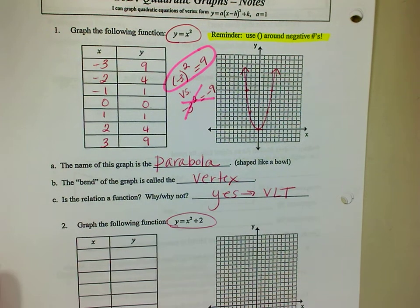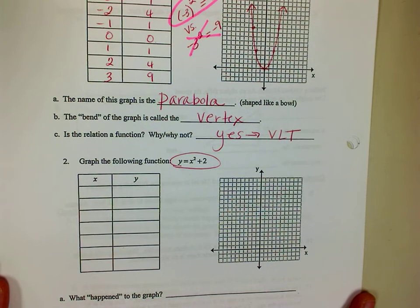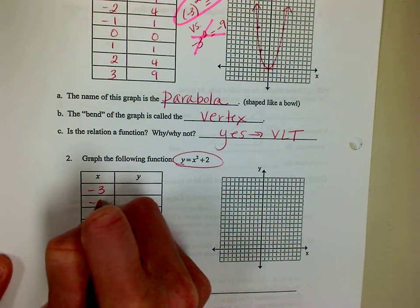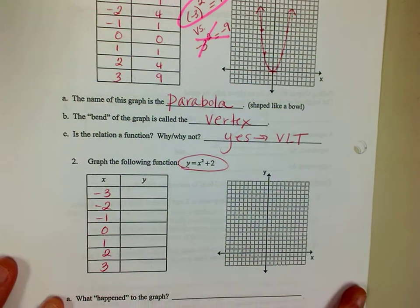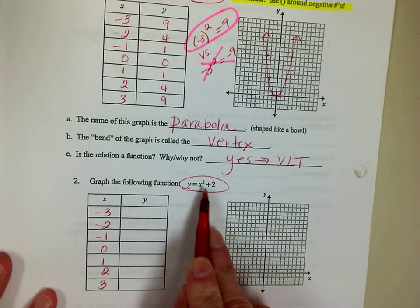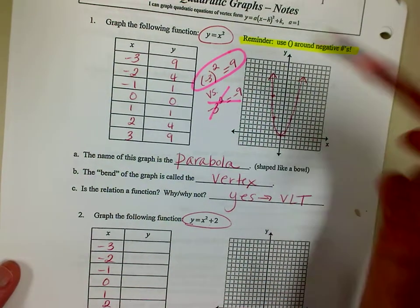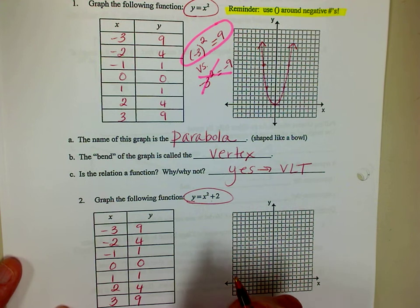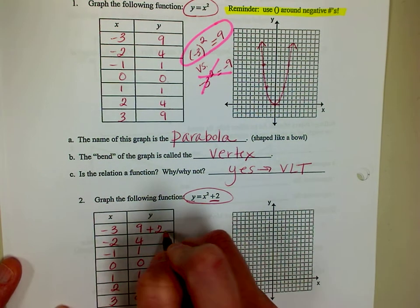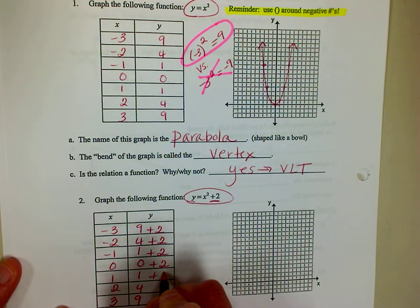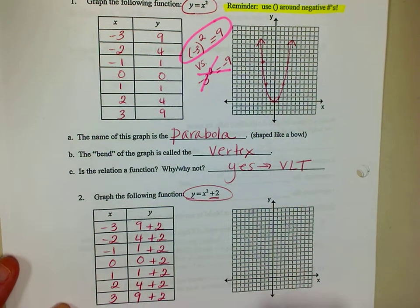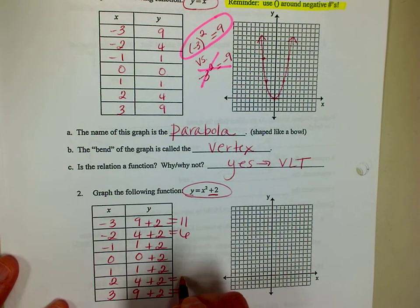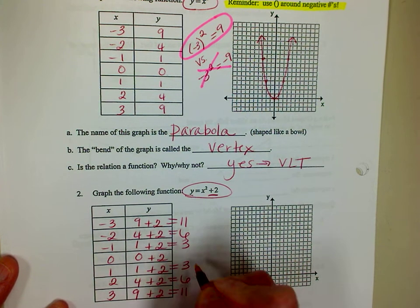Let's try this next graph. I'm going to use the same x values — starting with negative 3, going all the way up to positive 3. This time I'm going to square the number and then add 2. These are all the numbers I get when I square them, and then I'm just going to add 2 to it. So adding 2 to all the squares, I get 11, 11, 6, 6, 3, 3, and 2.